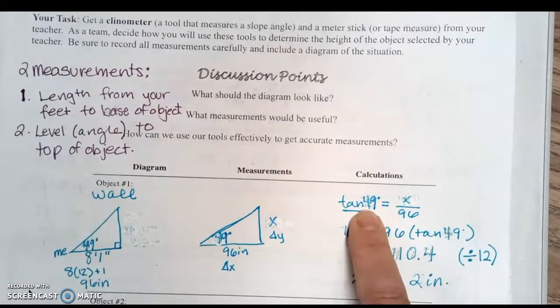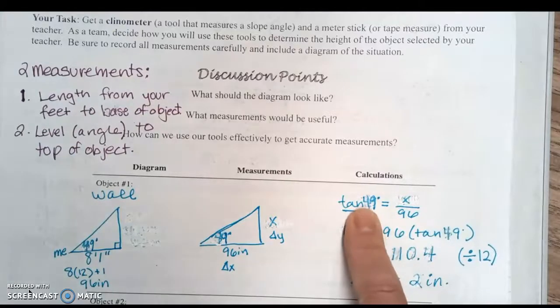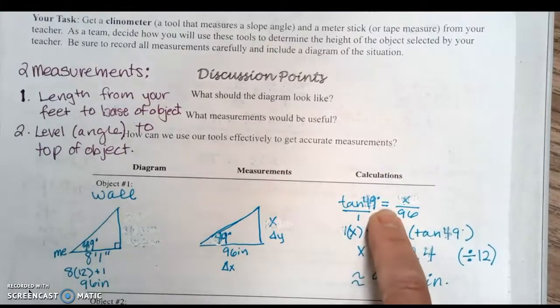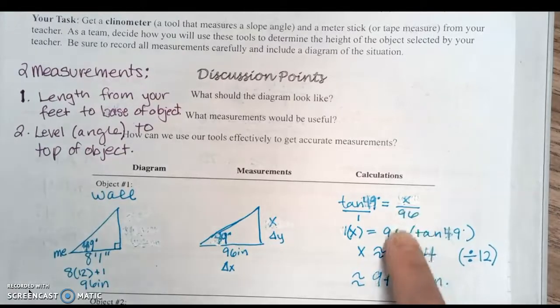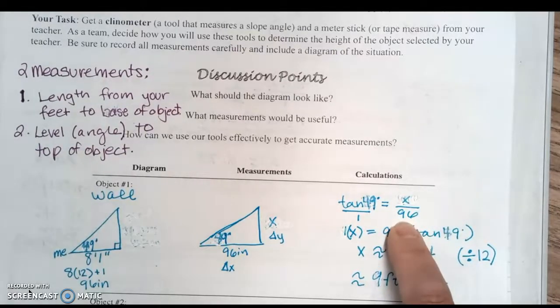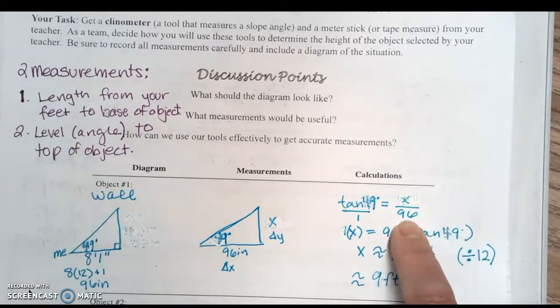We set up our tangent equation: the tangent of 49 degrees equals the change in y (which we want to discover as x) over the change in x, which is 96. So tan(49°) = x/96.